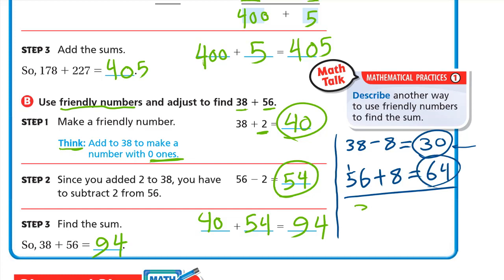So 64. So now our new problem will be 30 plus 64. So 30 plus 64 equals 4 plus 0 is 4. 6 plus 3 is 9. Also 94. So this is another way we can make the 38, 30 by subtracting 8. And we have to add this 8 to the other number. So 40 plus 54 or 30 plus 64 both are correct. They both give us 94.